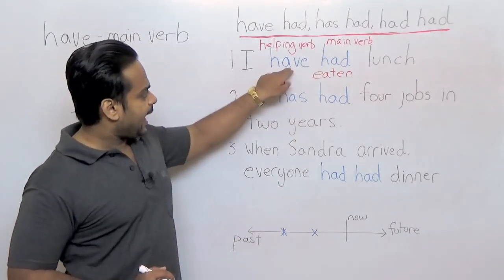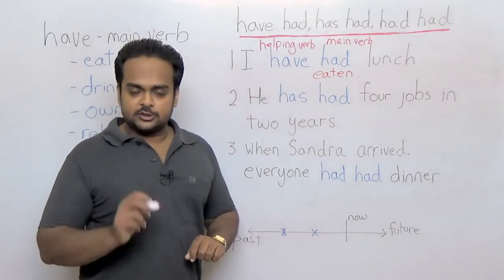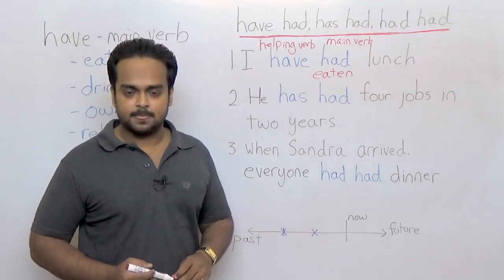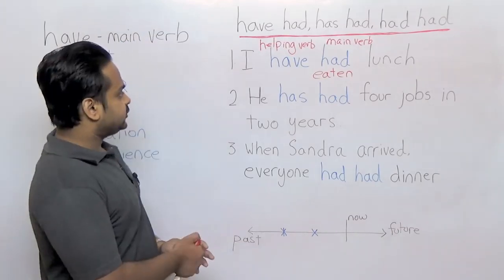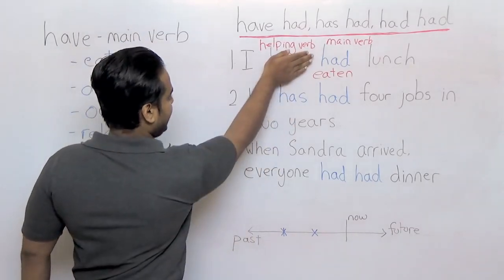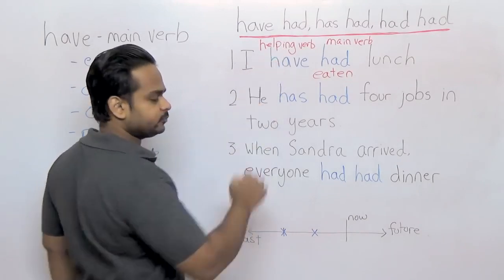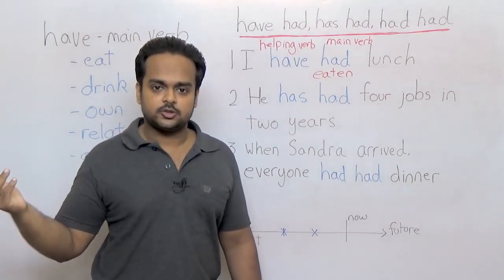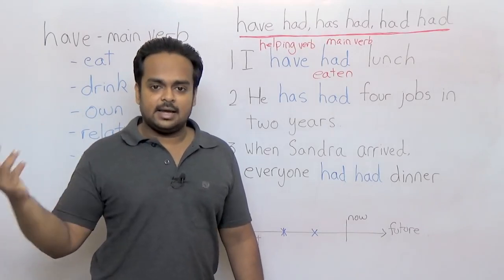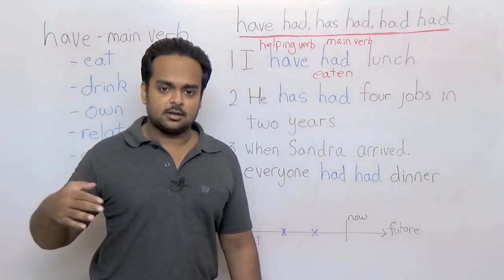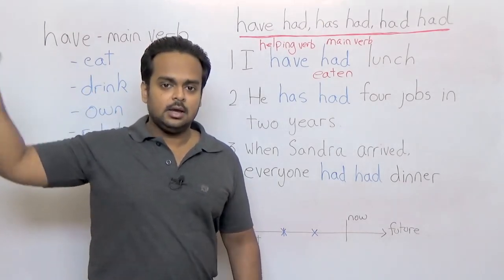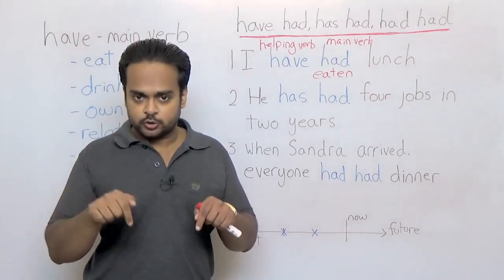But what about this have? Well as I told you before, that have shows the tense of the sentence. To understand that, read the sentence without the have. I had lunch. I had lunch means I ate lunch. When did I have lunch? Maybe I had lunch yesterday or the day before, any time in the past and that has no connection to the present.